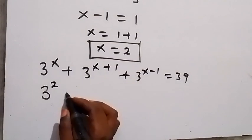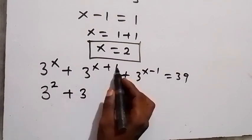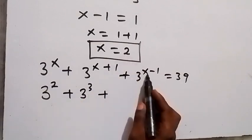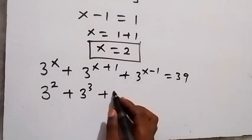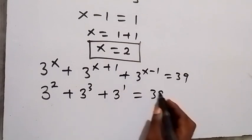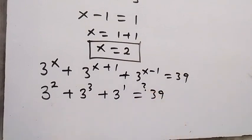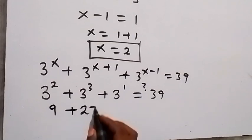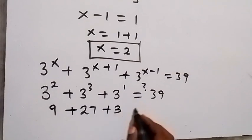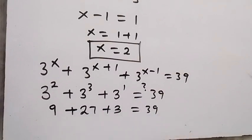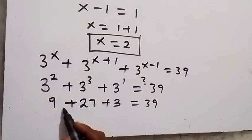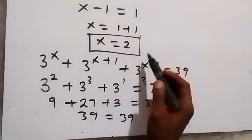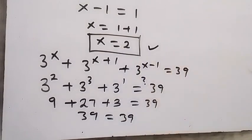With x equals 2: 3 squared, plus 3 raised to power 2 plus 1 which is 3 cubed, plus 3 raised to power 2 minus 1 which is 3 raised to power 1. That gives 9 plus 27 plus 3. Adding: 27 plus 3 is 30, and 30 plus 9 is 39, which equals 39. So the left-hand side equals the right-hand side, confirming x equals 2 is the solution.